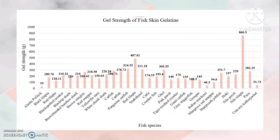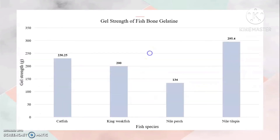Gel strength of fish skin gelatin ranged from 860.5 grams from Nile Tilapia to 33 grams from Alaska Pollock. The highest gel strength of fish bone gelatin was also from Nile Tilapia, while the lowest gel strength of fish bone gelatin was obtained from Nile perch.